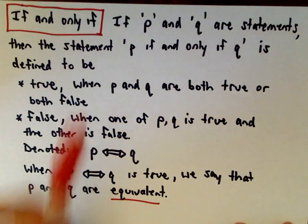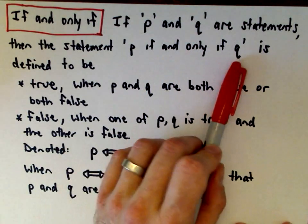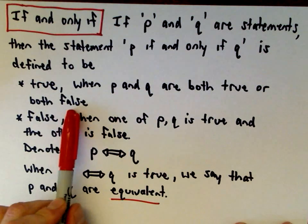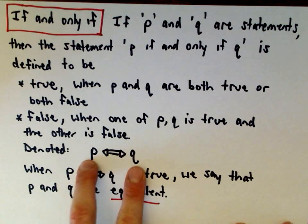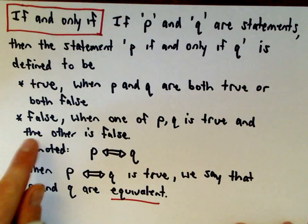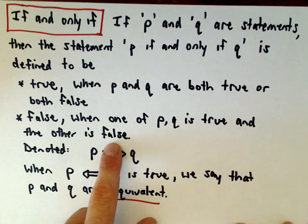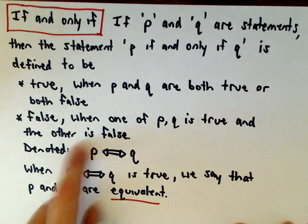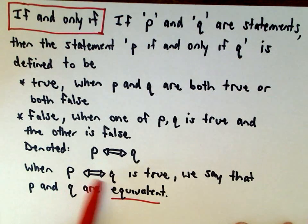If-and-only-if statements are basically implications that point both ways. If P and Q are statements, then 'P if and only if Q' is true when both P and Q are both true or both false, and false when one is true and the other is false — that is, when they don't have the same truth values. When this statement is true, we say P and Q are equivalent, meaning their truth values are the same.